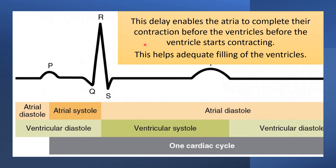The AV nodal delay enables the atria to complete their contraction — completely releasing blood into the ventricle — before the ventricle starts contracting. Before ventricular systole, the ventricle becomes adequately filled. This AV nodal delay helps in the adequate filling of the ventricles, and this is one important benefit of AV nodal delay.